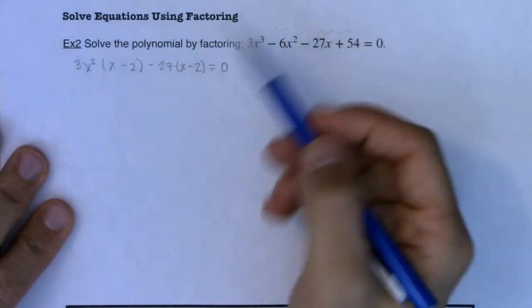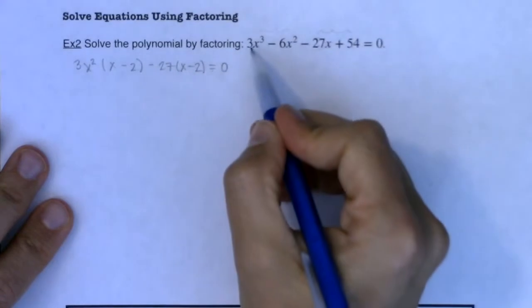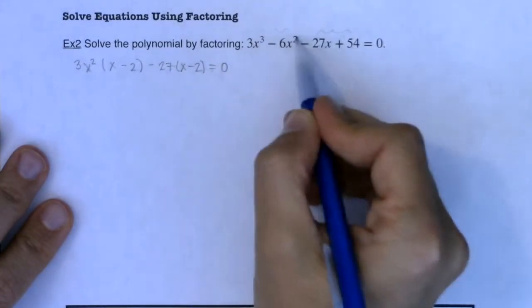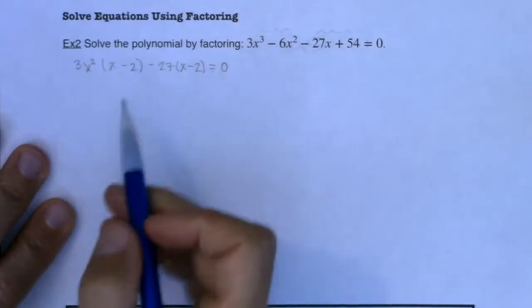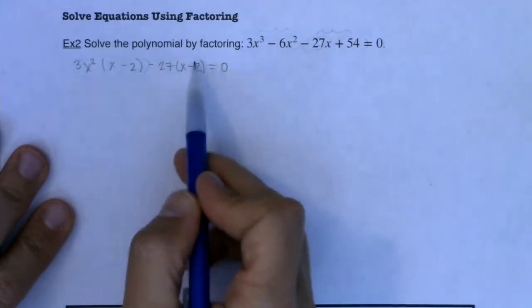Alright now even though it looks funkier this is only two terms. This is now a binomial. So where this was a polynomial, one term, two terms, three terms, four terms. This is now a binomial. This is the first term and this is the second term.